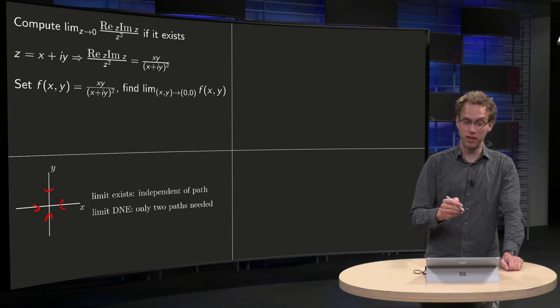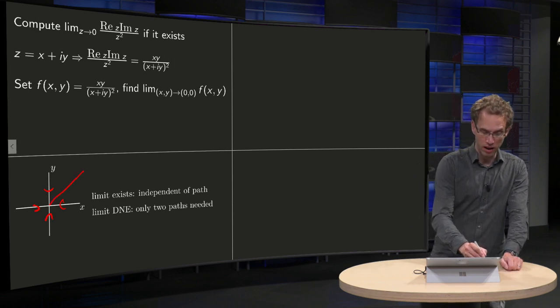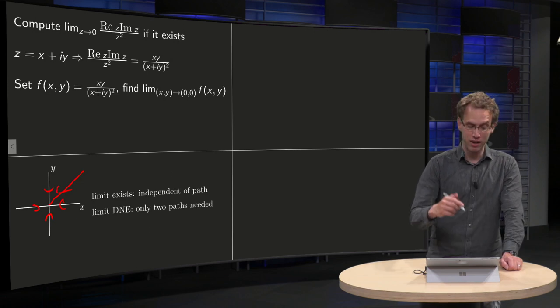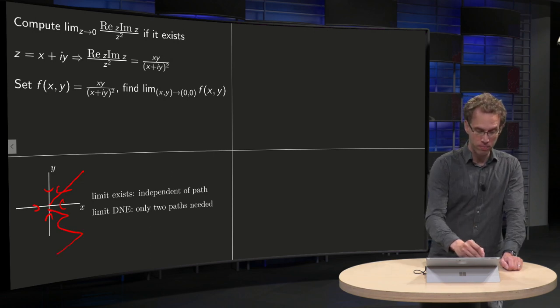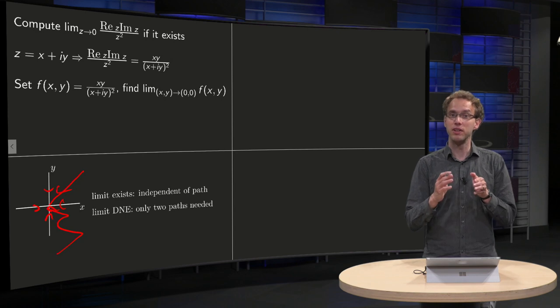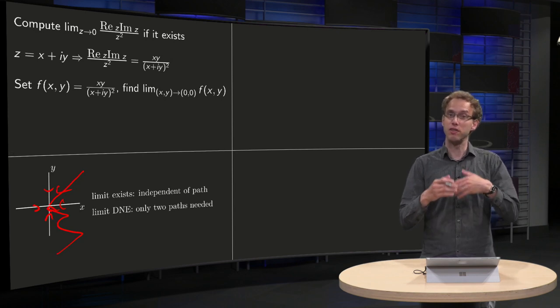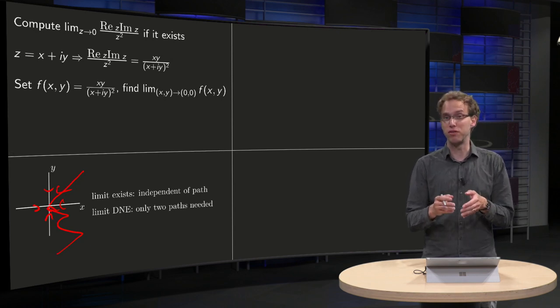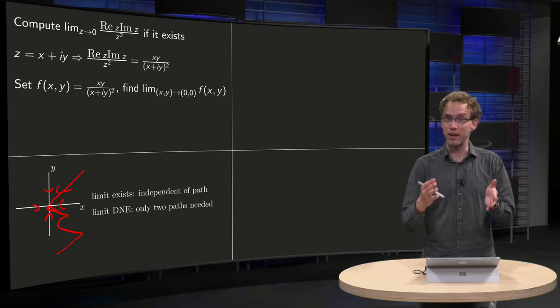But we can also take a different path, we can take some line with a different angle or we can take any curve we like. So a limit does exist if the answer we get is independent of the path we take. So we should take all possible paths, which is kind of difficult to check whether a limit exists.